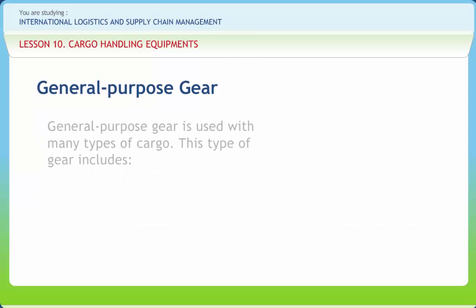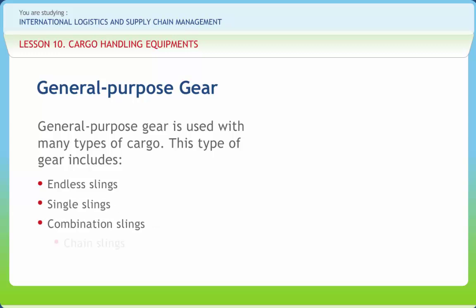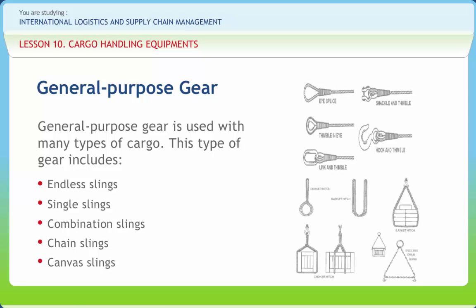General purpose gear is used with many types of cargo. This type of gear includes endless slings, single slings, combination slings, chain slings and canvas slings. The ends of slings are usually made up into eyes, either with or without thimbles. The eyes fit on the cargo fork and attach to the drafts or loads of cargo.